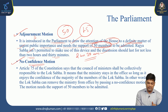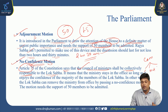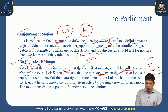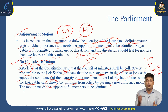Regarding the no confidence motion: article 75 of the Indian Constitution says that the Council of Ministers shall be collectively responsible to the Lok Sabha. The ministry stays in office only as long as it enjoys the confidence of the majority of members. The Lok Sabha can remove the ministry from office by passing a no confidence motion, which also needs the support of around 50 members to be admitted.